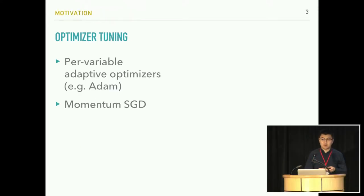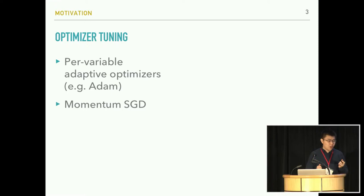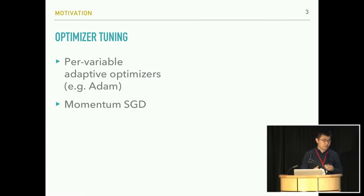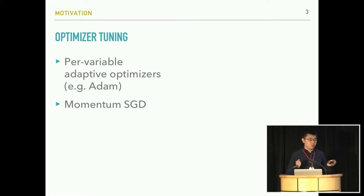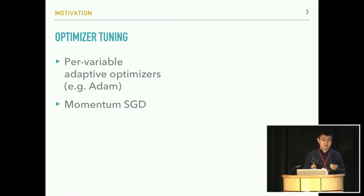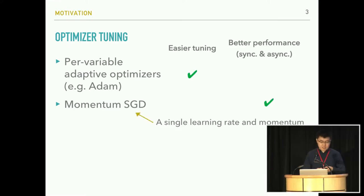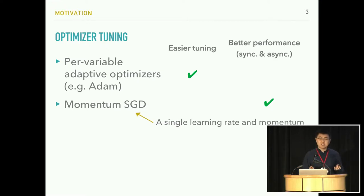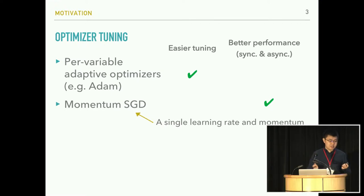Among the different types of hyperparameters for machine learning models, the hyperparameters for optimizers are usually the key to strong model performance. The de facto approach to reduce optimizer tuning labor is using adaptive optimizers, such as the Adam optimizer. These optimizers typically tune individual learning rates for each variable, but they don't tune the momentum values. However, recently researchers have seen that in many NLP or vision models, under hand tuning, momentum stochastic gradient descent with a single learning rate and momentum can actually attain strong or better generalization performance.